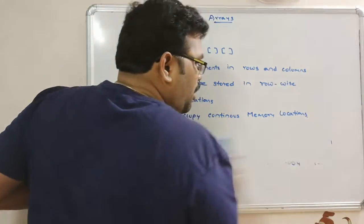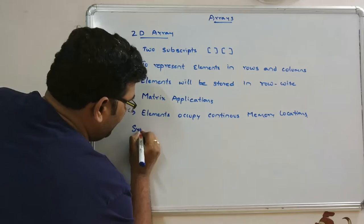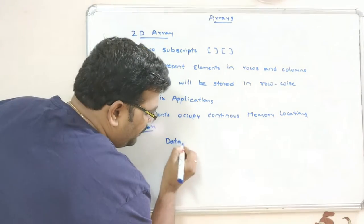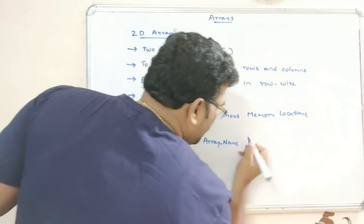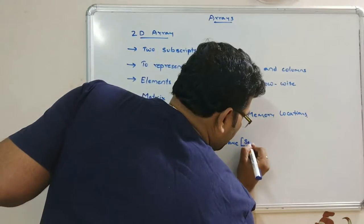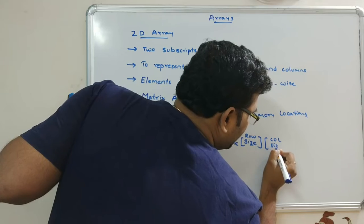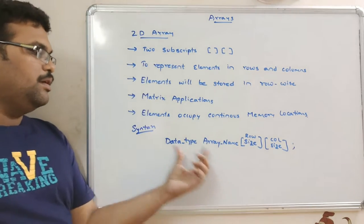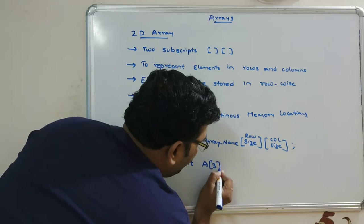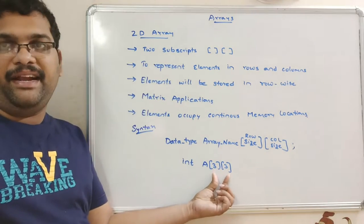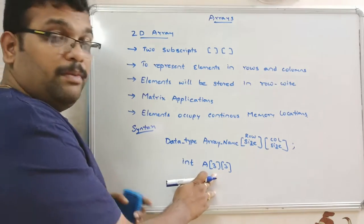How to initialize or declare a two-dimensional array? The syntax is: data type, followed by array name, followed by the row size, then column size. For example, int a[3][3] implies a three-by-three matrix. Total nine elements will be stored, with rows indexed 0, 1, 2 and columns indexed 0, 1, 2.